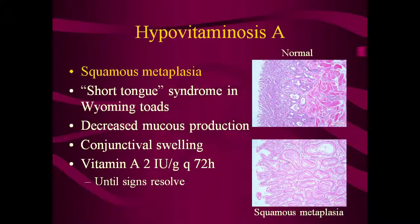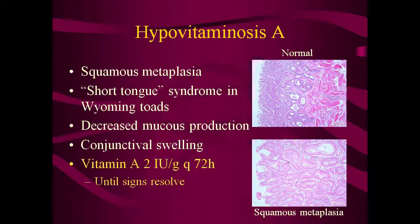Another common nutritional disease is hypovitaminosis A. A lack of appropriate amounts of vitamin A in the diet leads to squamous metaplasia in various organs. The most studied manifestation is the short tongue syndrome seen in Wyoming toads — squamous metaplasia leads to decreased mucus production of the tongue, making it difficult for the frog to catch prey items. Conjunctival swelling is another manifestation. Treatment consists of supplementing vitamin A by dusting prey items with crushed beta-carotene tablets, though other methods such as misting with a liquid formulation or individual topical administration have also been tried.